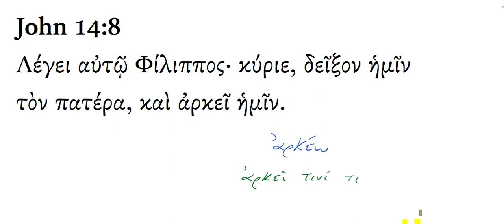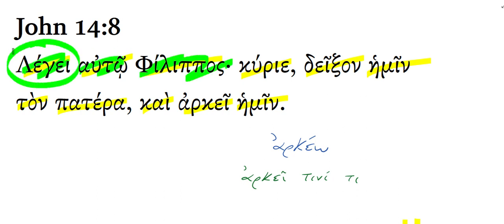John 14:8. Here Philip responds to Jesus talking about his unique relationship with the Father and his revelation of the Father. Philip says to him — notice this narrative or historical present, which we would put in the past in a final translation — Philip said to him, that is, said to Jesus.